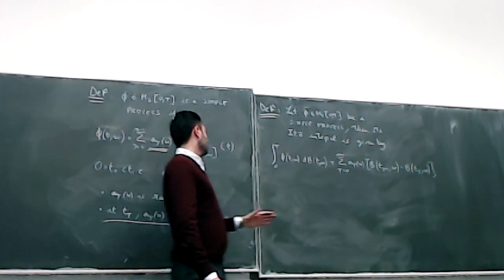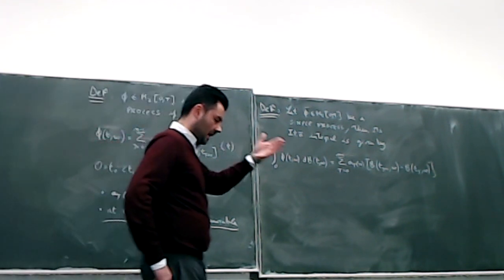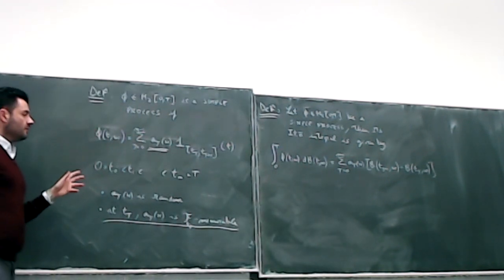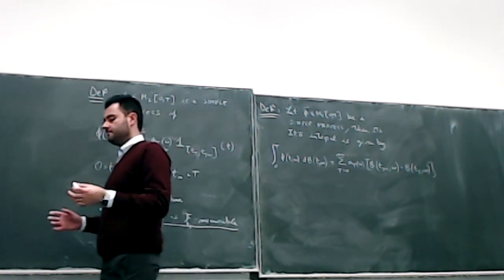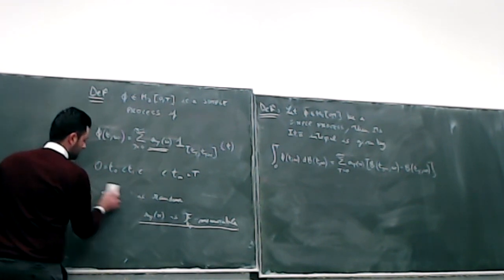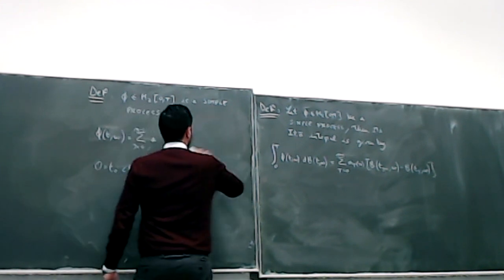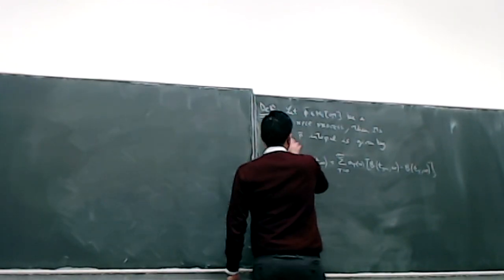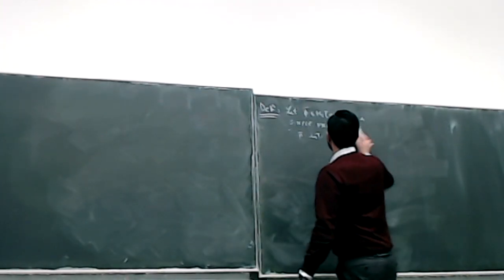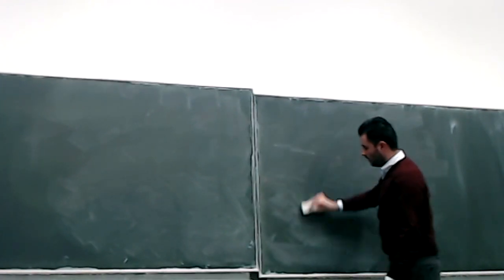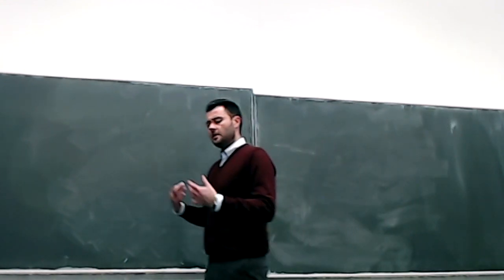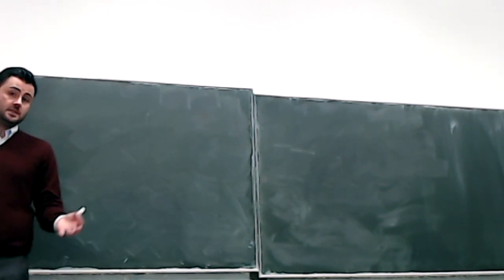The first thing we can do once we have this definition is study the basic properties of the Itô integral for simple processes. We will consider four properties. I will leave the proofs of the first two to you since they follow directly from substitution. I will focus more on the last two properties, which are more interesting from a probabilistic point of view.